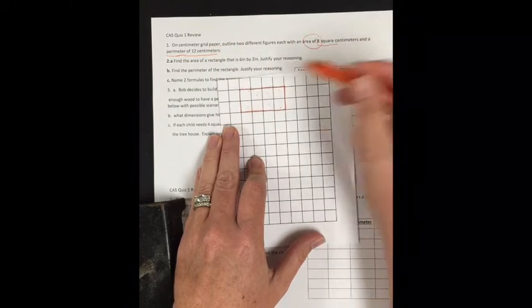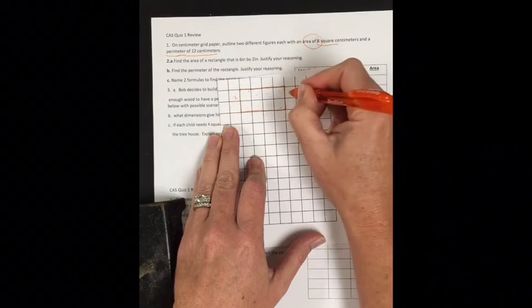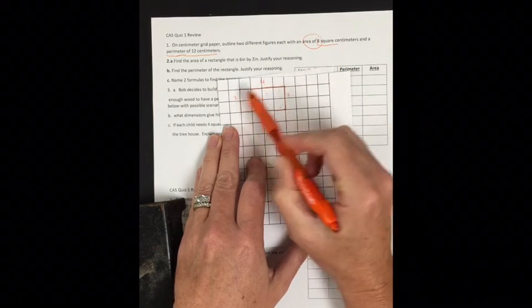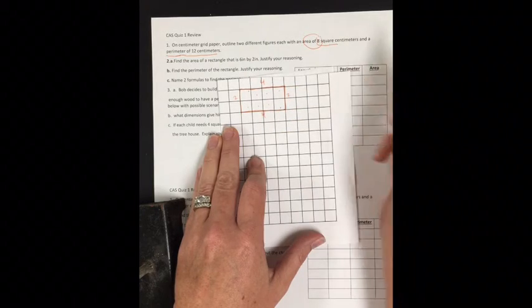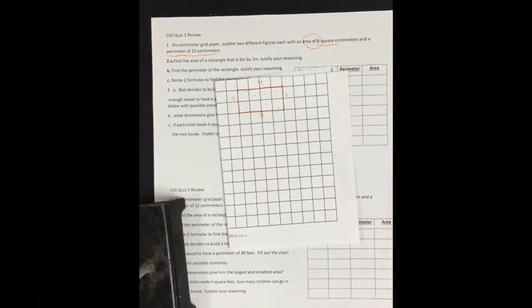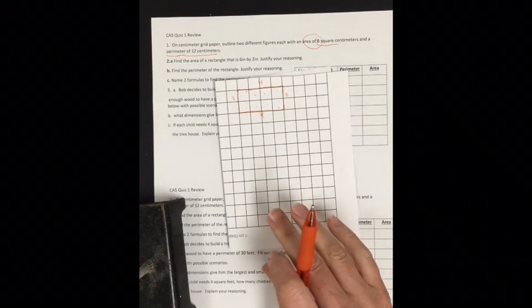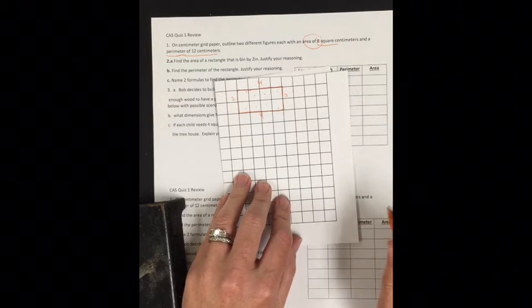Now let's check my perimeter, make sure it's 12. 2 on either side, 4 on top. 2 plus 4 is 6, and 2 plus 4 is 6, and 6 plus 6 is 12. So I do have a shape that has a perimeter of 12 and an area of 8.